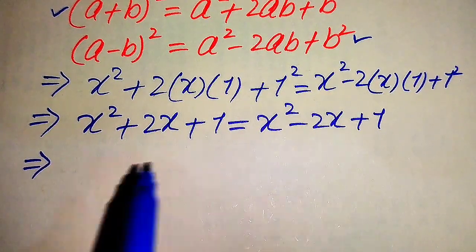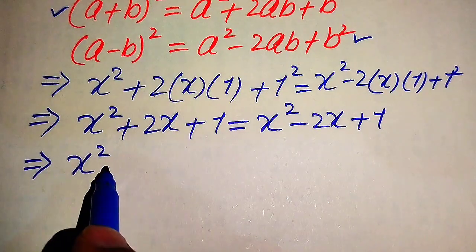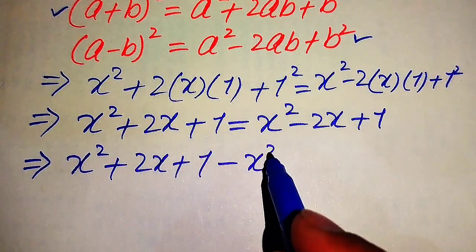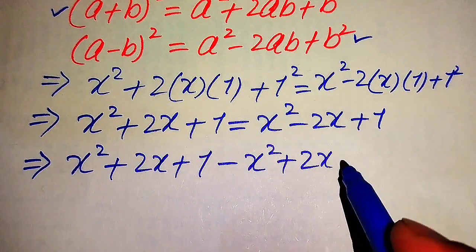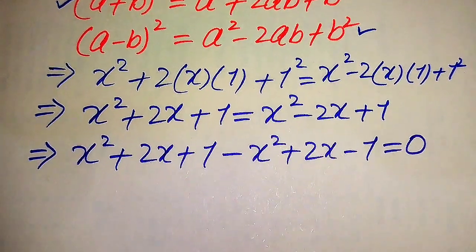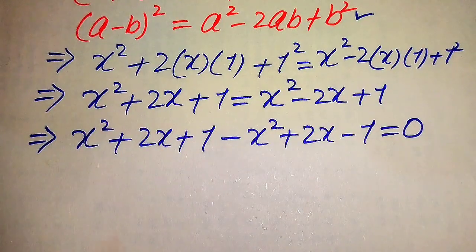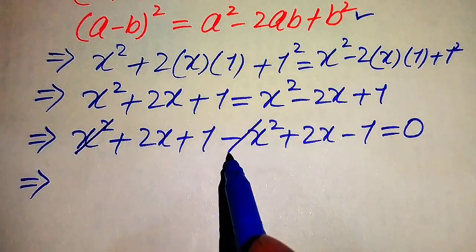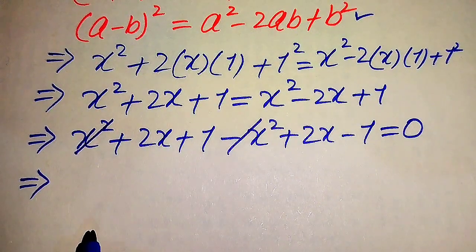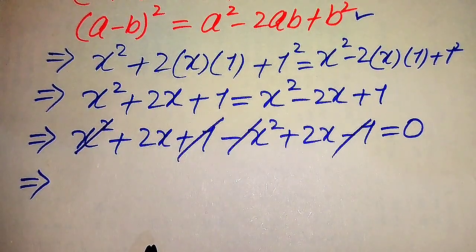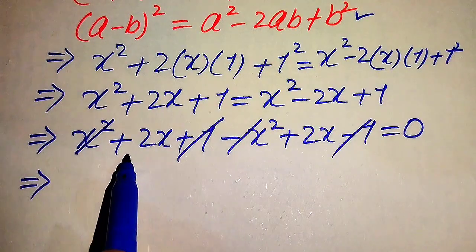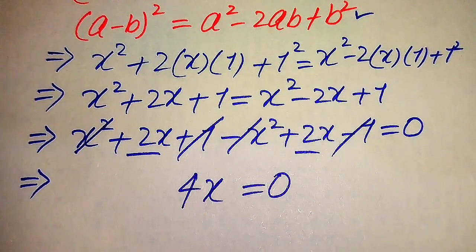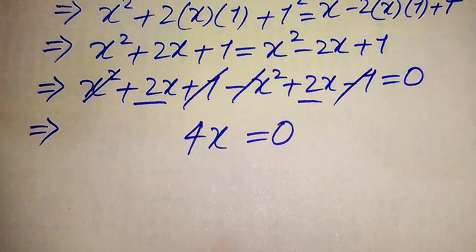In the next step we move all terms from the right-hand side to the left-hand side, giving x² + 2x + 1 − x² + 2x − 1 = 0. The x² terms cancel each other out, and +1 and −1 also cancel, leaving us with 2x + 2x = 4x, so the equation becomes 4x = 0.